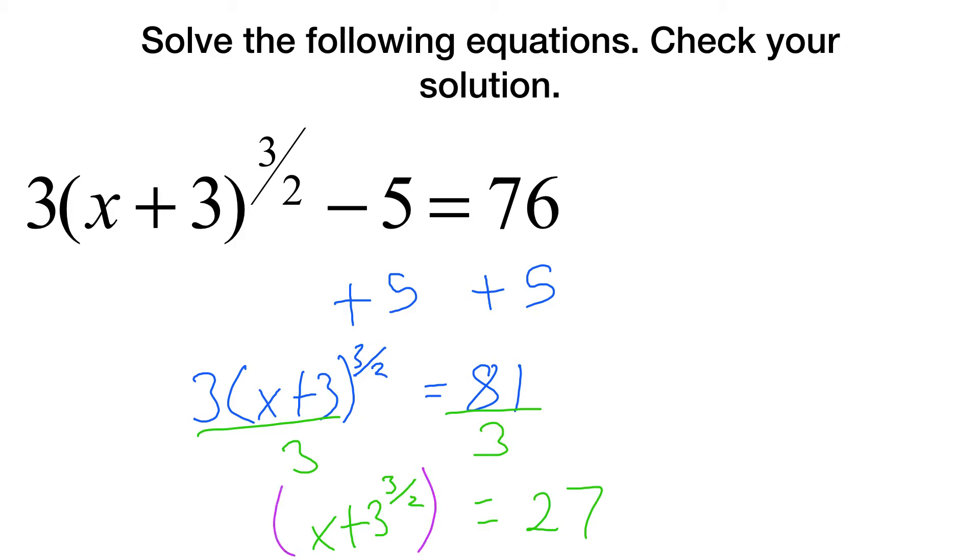Ooh, that's a number I recognize. And so at that point, I'll raise this to the 2 thirds because that's its reciprocal. Let's see. The cube root of 27 is 3, 3 squared. So we get x plus 3 is 9. Sorry, I didn't put the parentheses around x plus 3 like I was supposed to. So x plus 3 is 9, which means x equals 6.